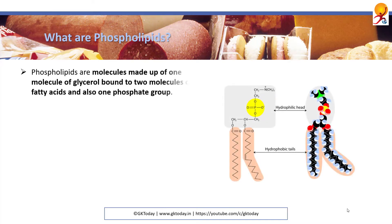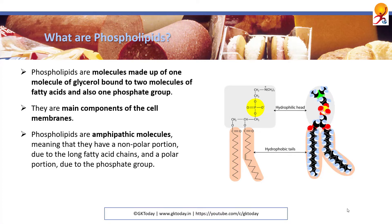What are phospholipids? Phospholipids are molecules made up of one molecule of glycerol bound to two molecules of fatty acids and also one phosphate group. They are the main components of cell membranes and they are also amphipathic molecules, meaning they have a nonpolar portion due to the long fatty acid chains and a polar portion due to the phosphate group. So they dissolve in both water and organic solvents.